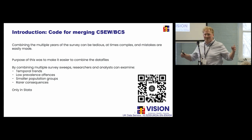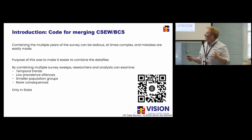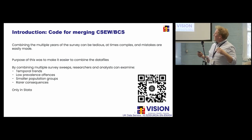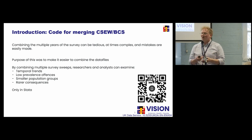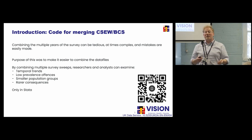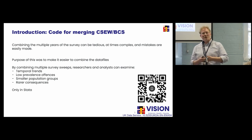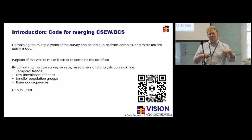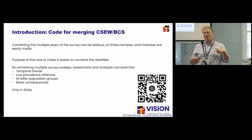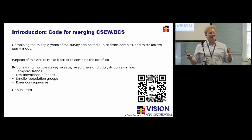Why combine a lot of years? The point is to do temporal trends but also to look at specific offences or crimes that are not common enough in a single year of a crime survey - you combine a lot together. You can also look at specific population groups, intersecting inequalities and rare consequences. This project came from needing to do that for multiple projects, multiple times, and for multiple different timeframes. We developed this initially for our own project and thought it might be useful for others, so we decided to share it.